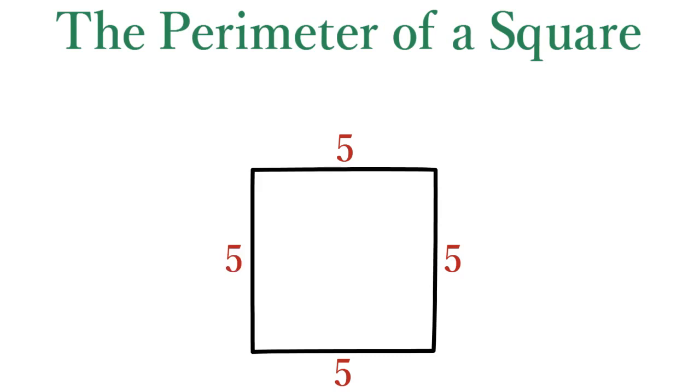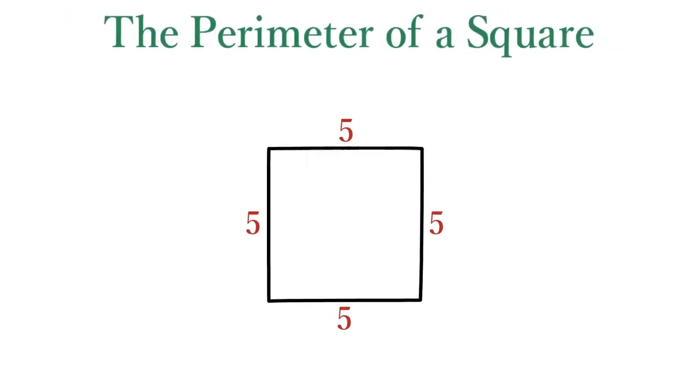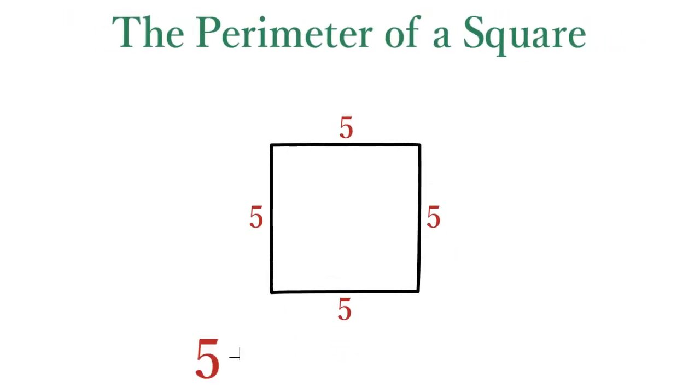The perimeter of a square is easy to measure. Simply add up the lengths of the four sides of that square.